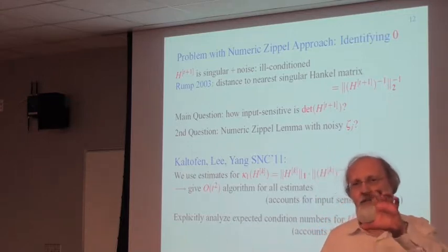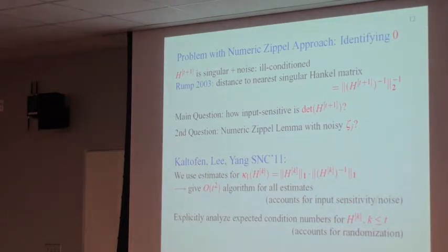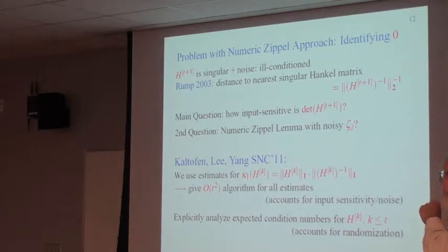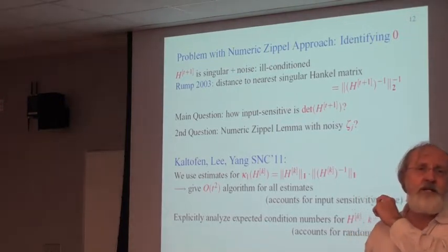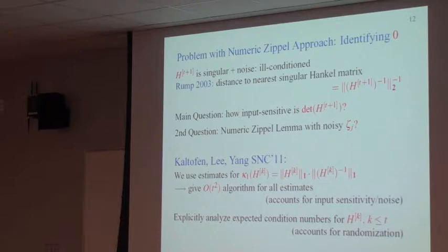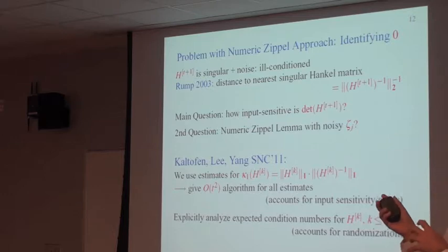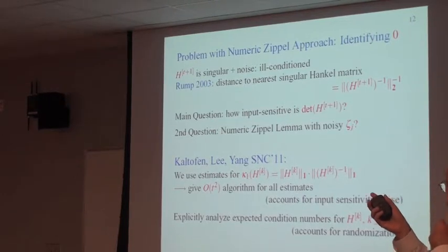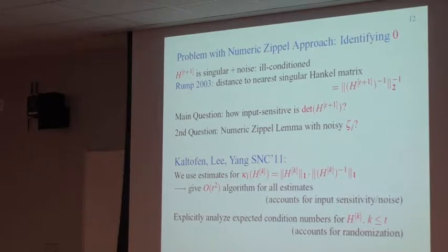The probabilistic analysis for the randomization was done by Rangjie Li in a beautiful way. So, I don't know anywhere else where this is done, where the, we tried it for total least squares, but we couldn't do it. But for this particular case, this is a Hankel matrix that has a special structure, she could actually do the probabilistic analysis of the condition number.